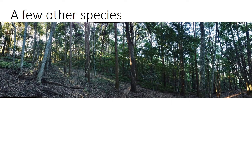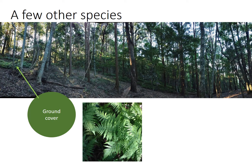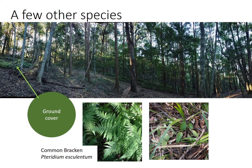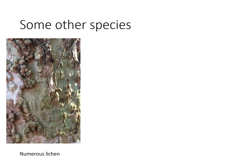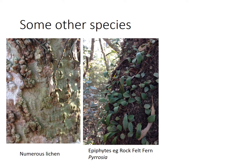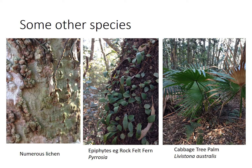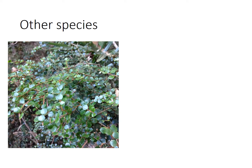What about some of the other species here at this site? The ground cover is bracken — the common bracken. And there's also, if you look carefully, some young vines growing. There's lots of lichen on the tree trunks and also some epiphytes like this rock felt fern. Another species we see a lot of here is the cabbage tree palm — this is a young one here that'll grow quite tall. Something quite common in rainforests is the orange thorn, whose name makes more sense when it's fruiting because it has orange fruit, and it has quite sharp little prickles as well.